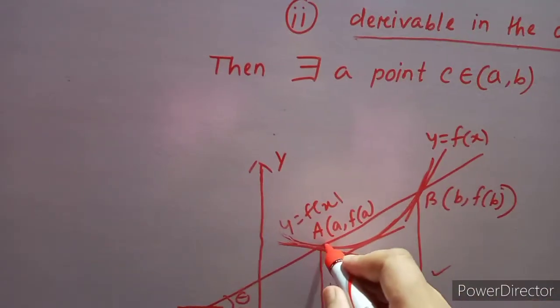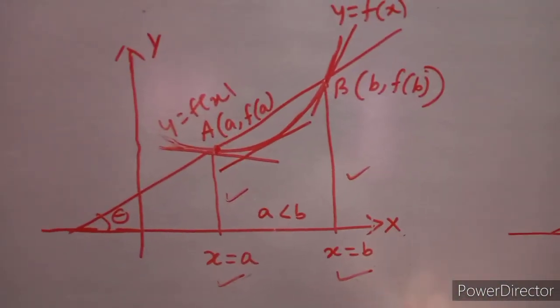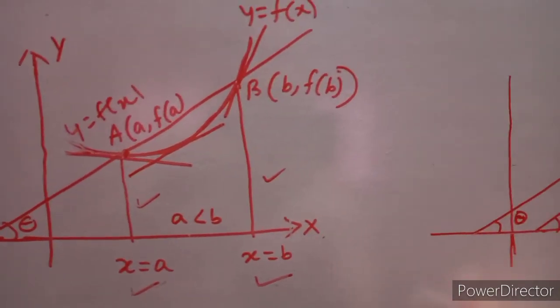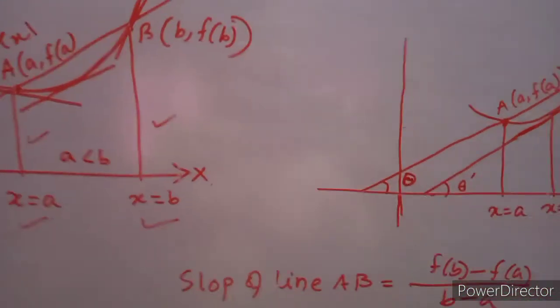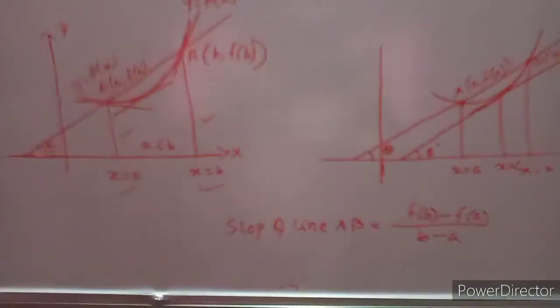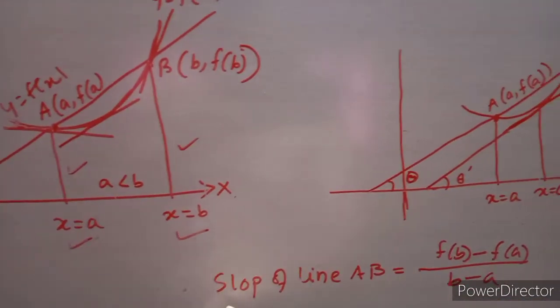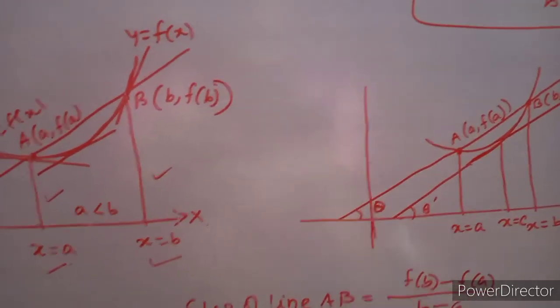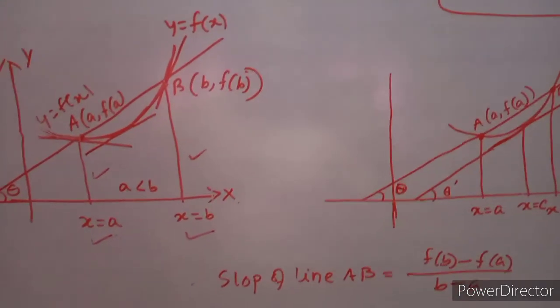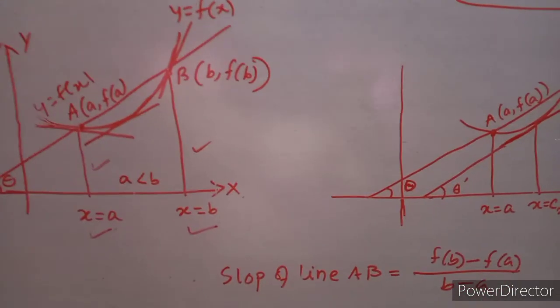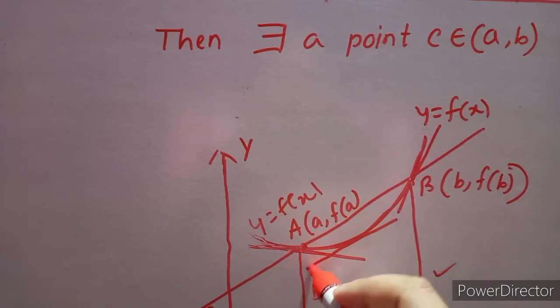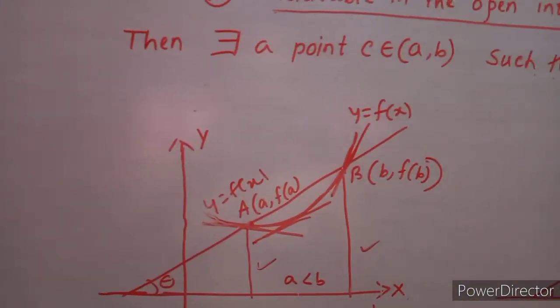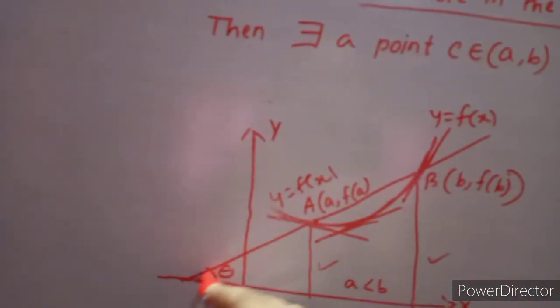The slope of the line AB is f(b) minus f(a) divided by b minus a. We get this from the concept of slope of a line: slope equals (y₂ minus y₁) divided by (x₂ minus x₁). Among all these tangents, we can find at least one tangent which is parallel to the line AB.